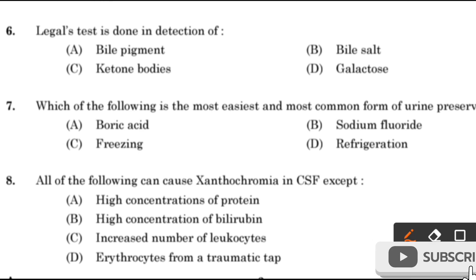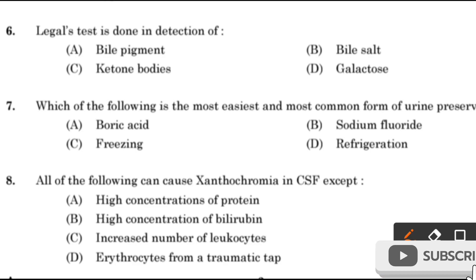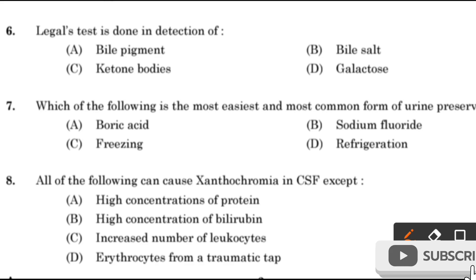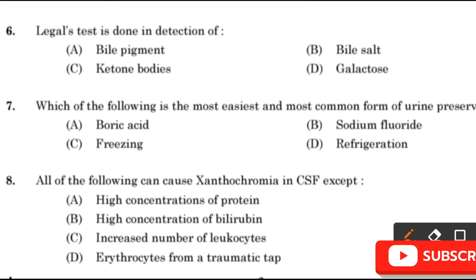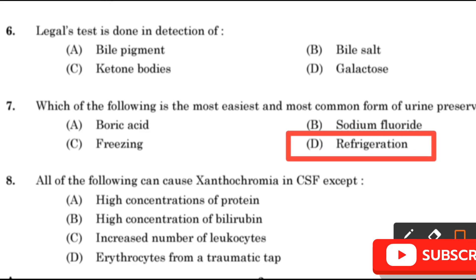Question number 7: Which of the following is the most easiest and most common form of urine preservation — Boric acid, Sodium fluoride, Freezing, or Refrigeration? The most common and easiest form of urine preservation is refrigeration.